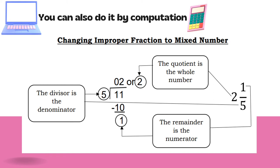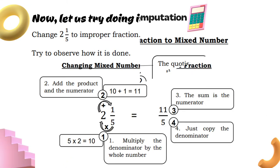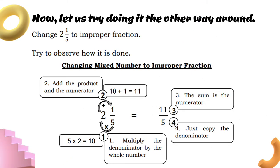Now let us try doing it the other way around. Change two and one-fifth to an improper fraction. To change a mixed number to an improper fraction: one, multiply the denominator by the whole number; two, add the product to the numerator; three, write the sum as the numerator of the improper fraction; and four, copy the denominator. Therefore, two and one-fifth, which is a mixed number, can be written as eleven-fifths as an improper fraction.